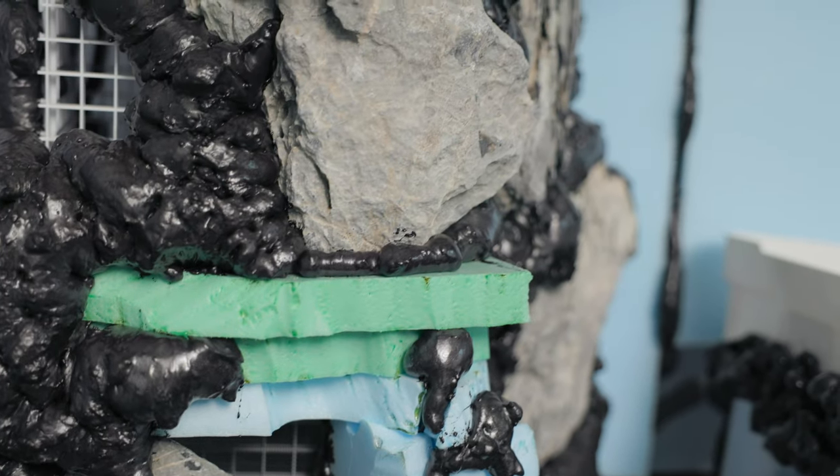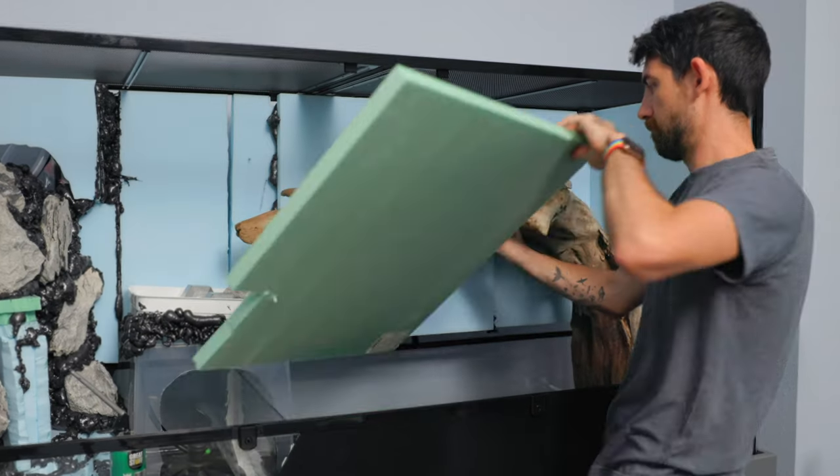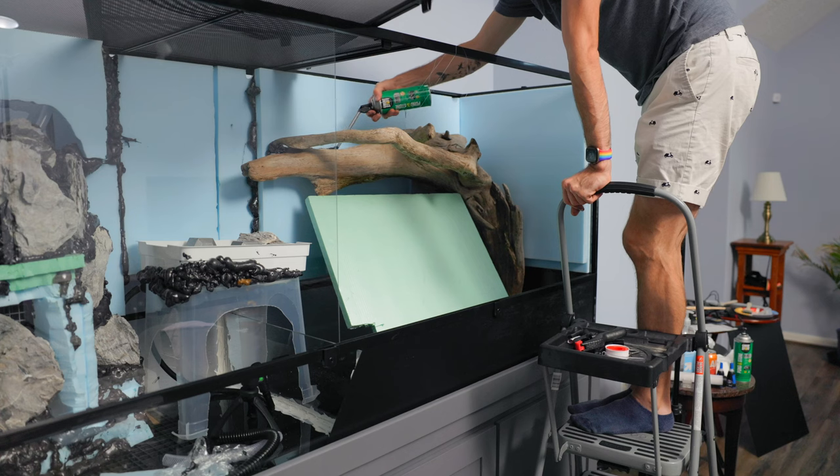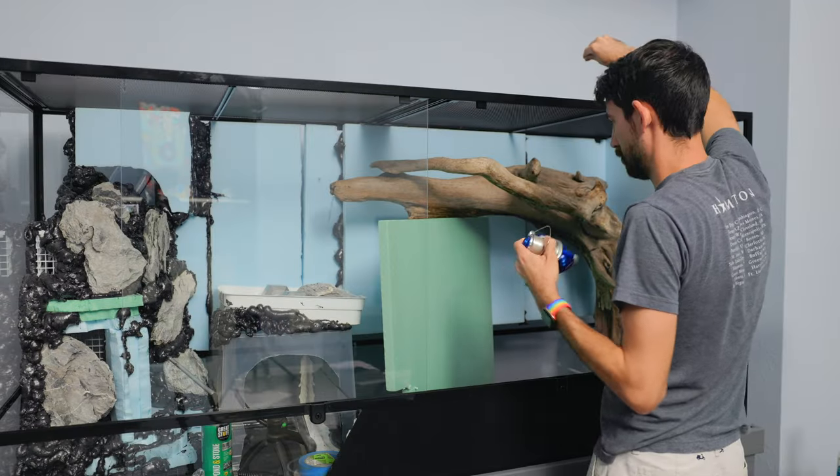I need to hold up this log somehow. So, I'm thinking of filling out the space behind it with some extra foam board and then using the spray foam to kind of fill in the gaps. In the meantime, I have it being held up by this fishing line and this other big piece of board right here.